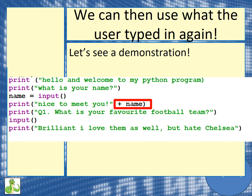So straight after we've asked their name, they can type it in using the input. It stores it in a variable called name, and we can reuse that. So I can say nice to meet you, plus name. By using the plus, we can refer back to a variable we've used before. So if I was to type Mr Atkinson, then it would say nice to meet you, Mr Atkinson on the screen.